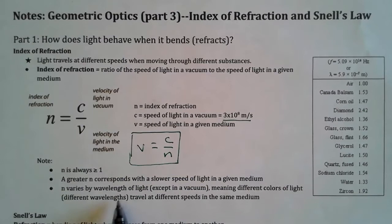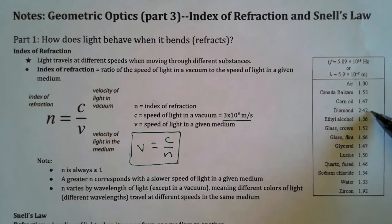A bigger n corresponds with a lower speed of light. Looking at the list, the substance with the highest index here is diamond at 2.42 — a pretty high index of refraction. Of all these substances, light is going to go the slowest in diamond and fastest in air.